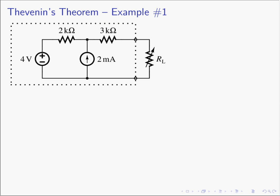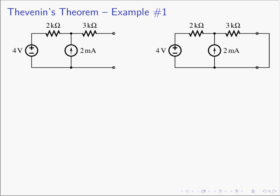To get started, our element of interest is the R_L resistor. The first thing we need to do is find VOC — open R_L and find VOC. Then we'll short out R_L and find ISC. Once we have those two values, we can find the Thevenin equivalent circuit.